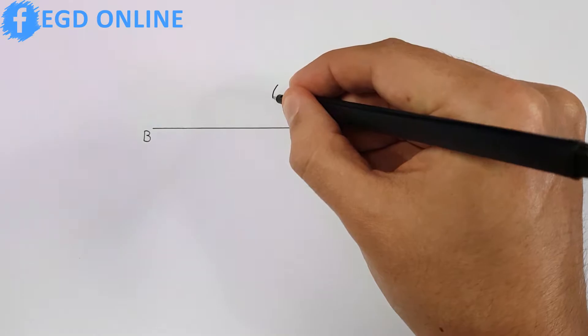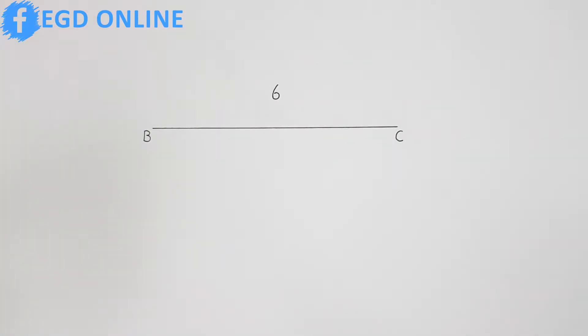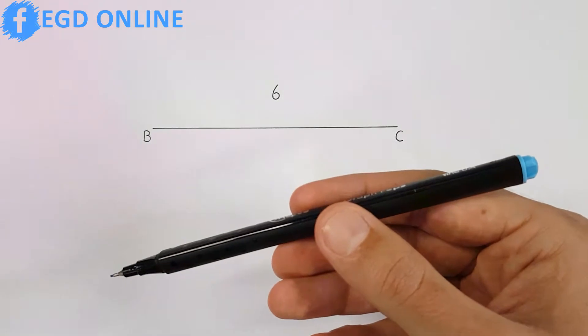And I will divide it into six equal parts. Note that I'm using a blue pen to show my construction lines.